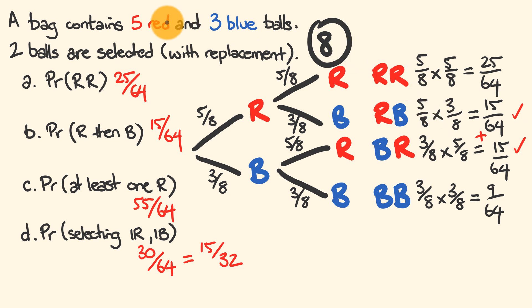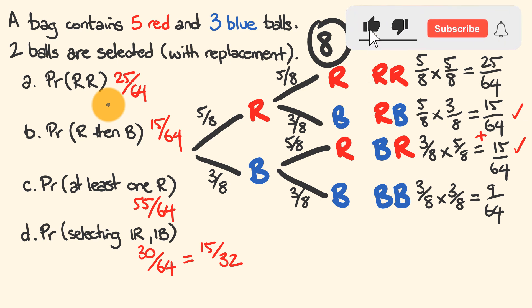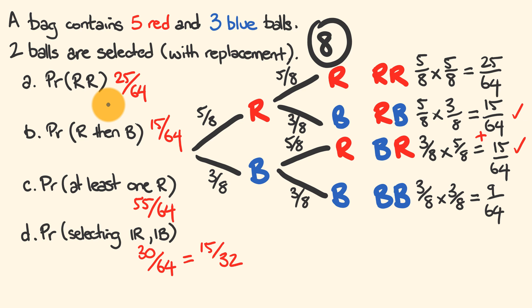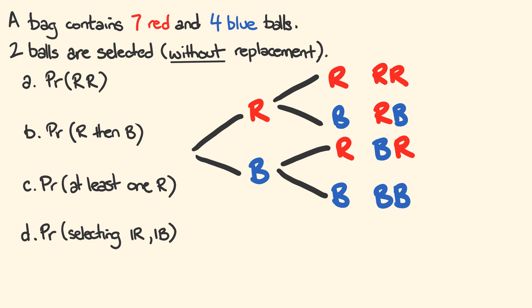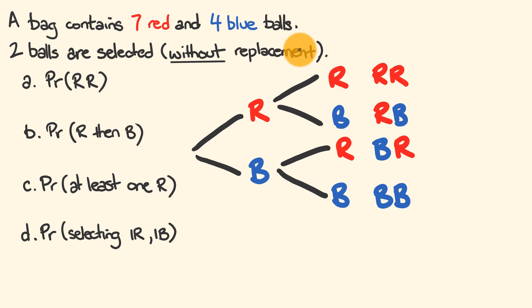That's how you use tree diagrams for with-replacement problems. Now let's look at a question where we don't replace the ball and see what changes. This new question is the same setup — selecting red and blue balls, two picks — but this time it is without replacement.